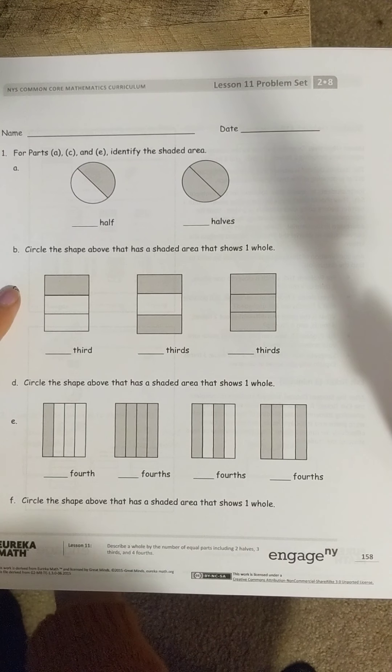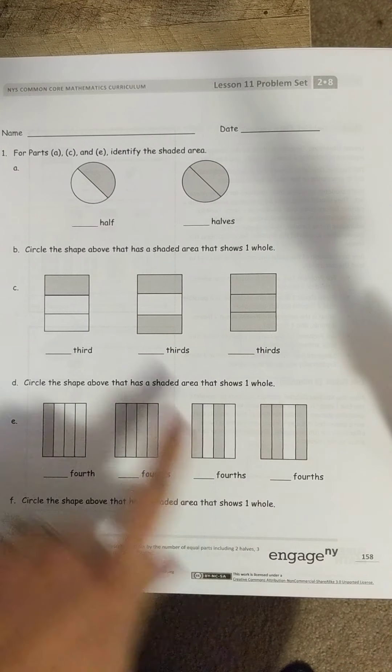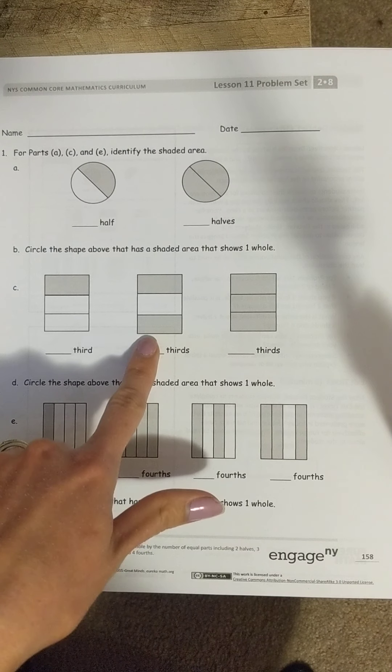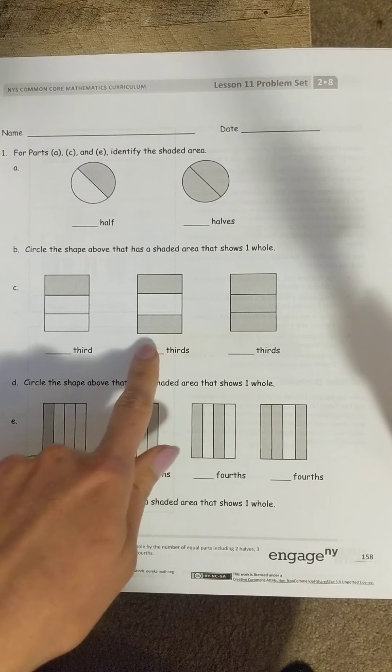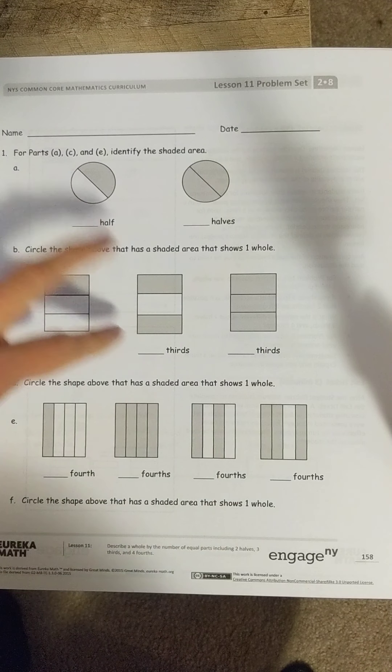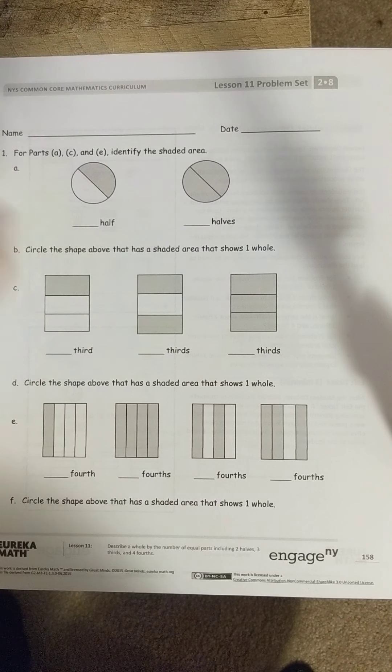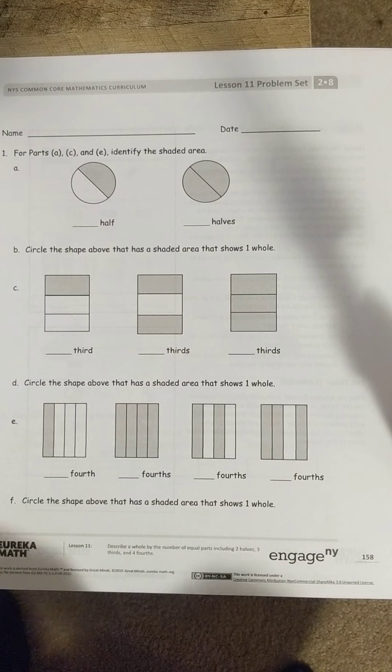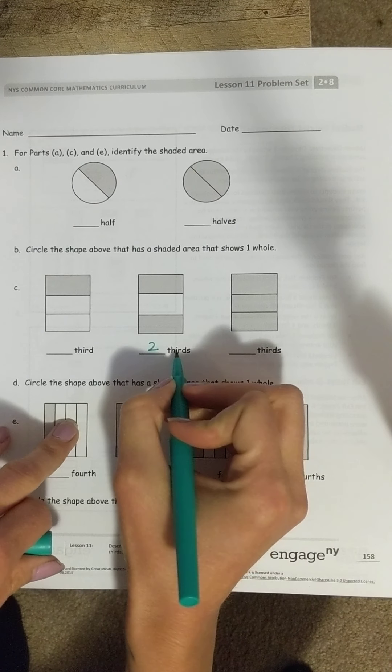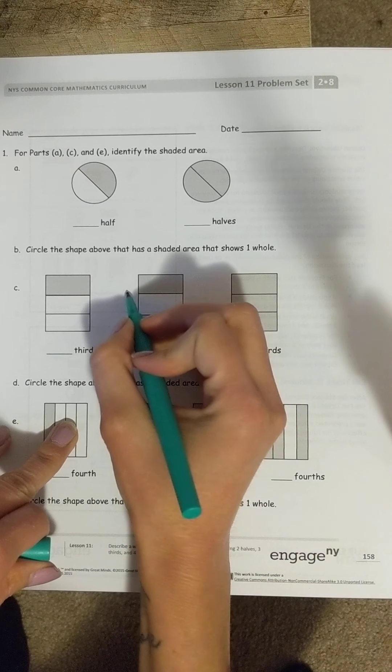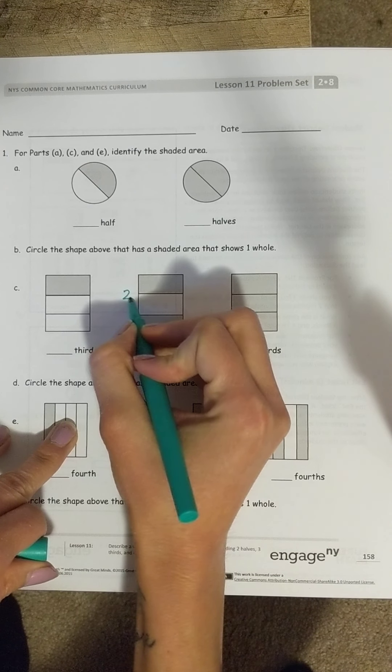We'll start here at C. If I'm looking over here at this shape, and I need to say how many thirds are shaded, I know that this one has two shaded in parts. So, that means two of the thirds are shaded.